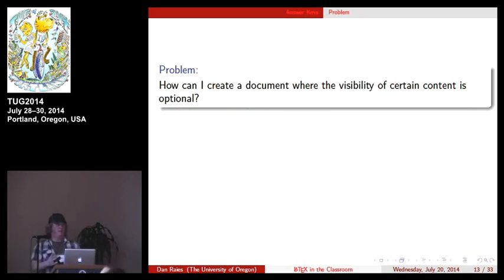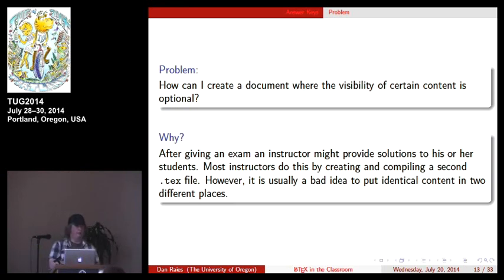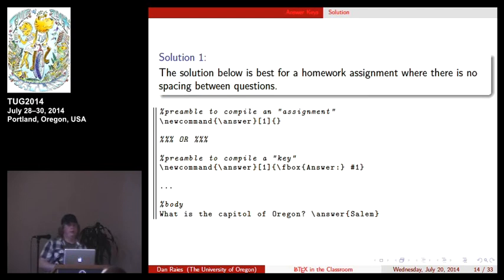Next problem. I have one document that contains some content that I want to show sometimes but hide other times. Why might I want to do that as a teacher? The answer is quiz, exam, homework keys. So I make homework1.tex, I give it to my students, they turn it in, then they want a key. The natural thing to do is make homework1_key.tex, copy and paste, and go from there. Now, this is bad because, as any good programmer knows, having the same identical content in two places is bad. Later, if you want to change homework1, you have to go to two different places to do that, and that's not great. I should say first that probably the best way to do this is, when you hear optional, you think, I want a package with an option. And that might be the best way to do it. But again, I don't want this person to have to write packages. So what I do is a custom command.